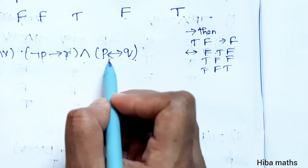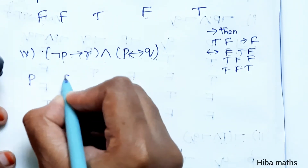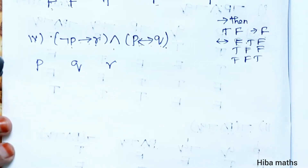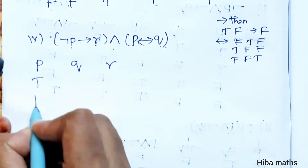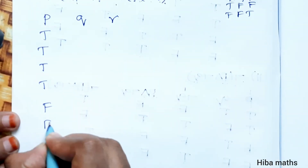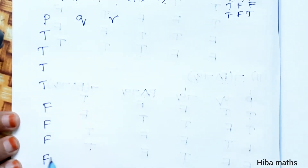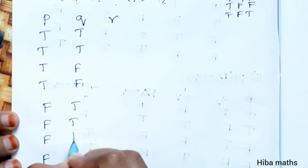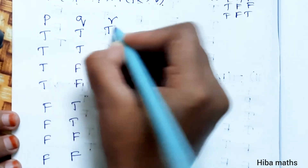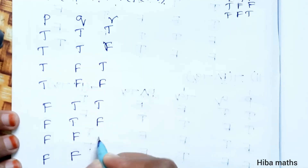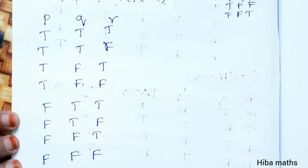If there are three variables P, Q, R — so P, Q, R — 2 power 3 equals 8 rows. For P: 4 true and 4 false. For Q: 2 true and 2 false, again 2 true and 2 false. For R: 1 true and 1 false, repeating. Now I can write it out.